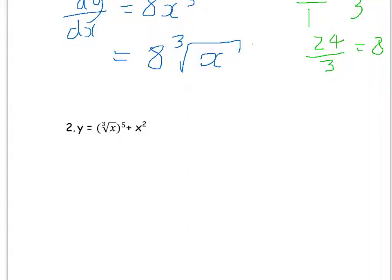So, this one, slightly more difficult, because this first part here, y equals, in brackets, the cube root of x, all to the power of 5 plus x squared. Well, this first bit hasn't been simplified into a fraction yet. So, let's do that first. So, you've got x cube rooted to the power of 5. So, firstly, let's rewrite this bit here.